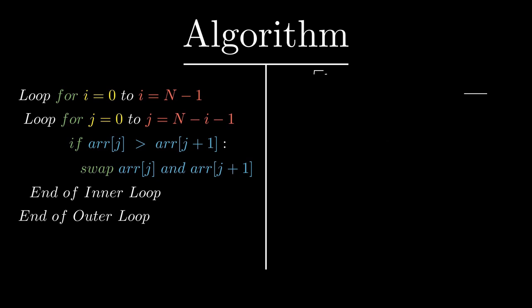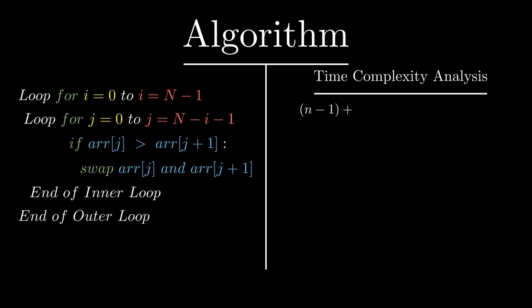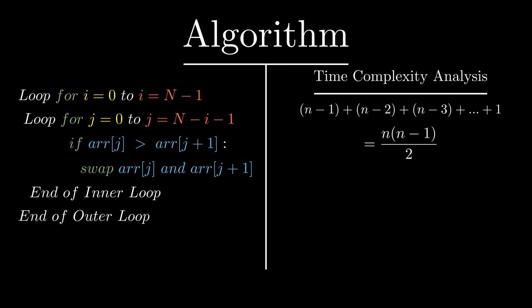Let's calculate the worst-case time complexity of this algorithm. The inner loop runs for each pass, and after each pass its range decreases by 1. So for the first pass the inner loop runs n-1 times, then n-2 times, then n-3 times, and so on down to 1. This expression is an arithmetic progression, and applying the formula gives n×(n-1)/2, which simplifies to (n²-n)/2. Taking the upper bound, the time complexity is O(n²).